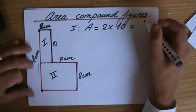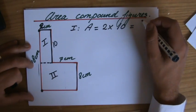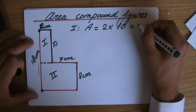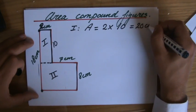So what is this length going to be? Hang on a minute, take away eight. That is going to be 10. And two times 10, so the area of rectangle one is 20 centimeters squared.